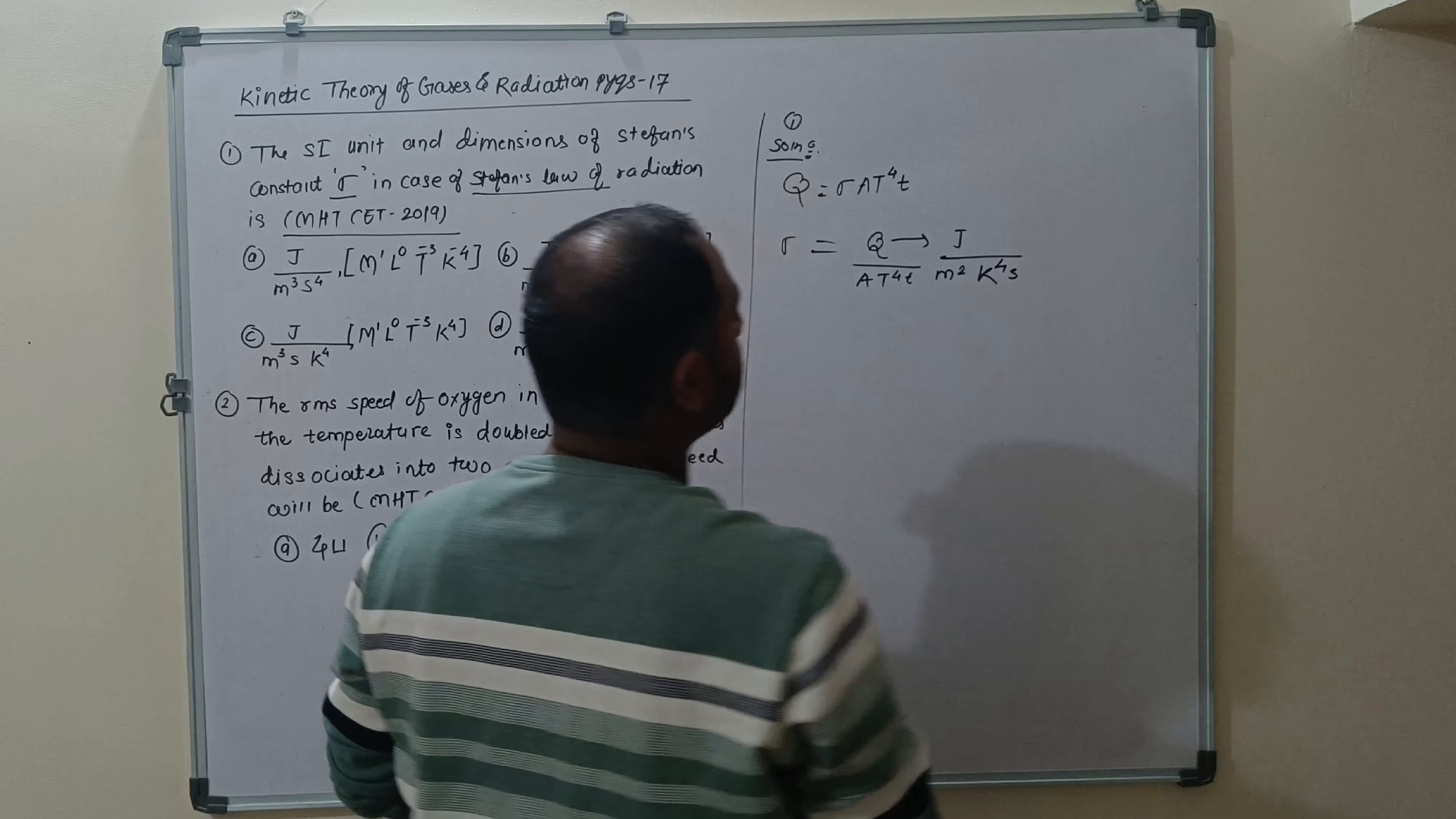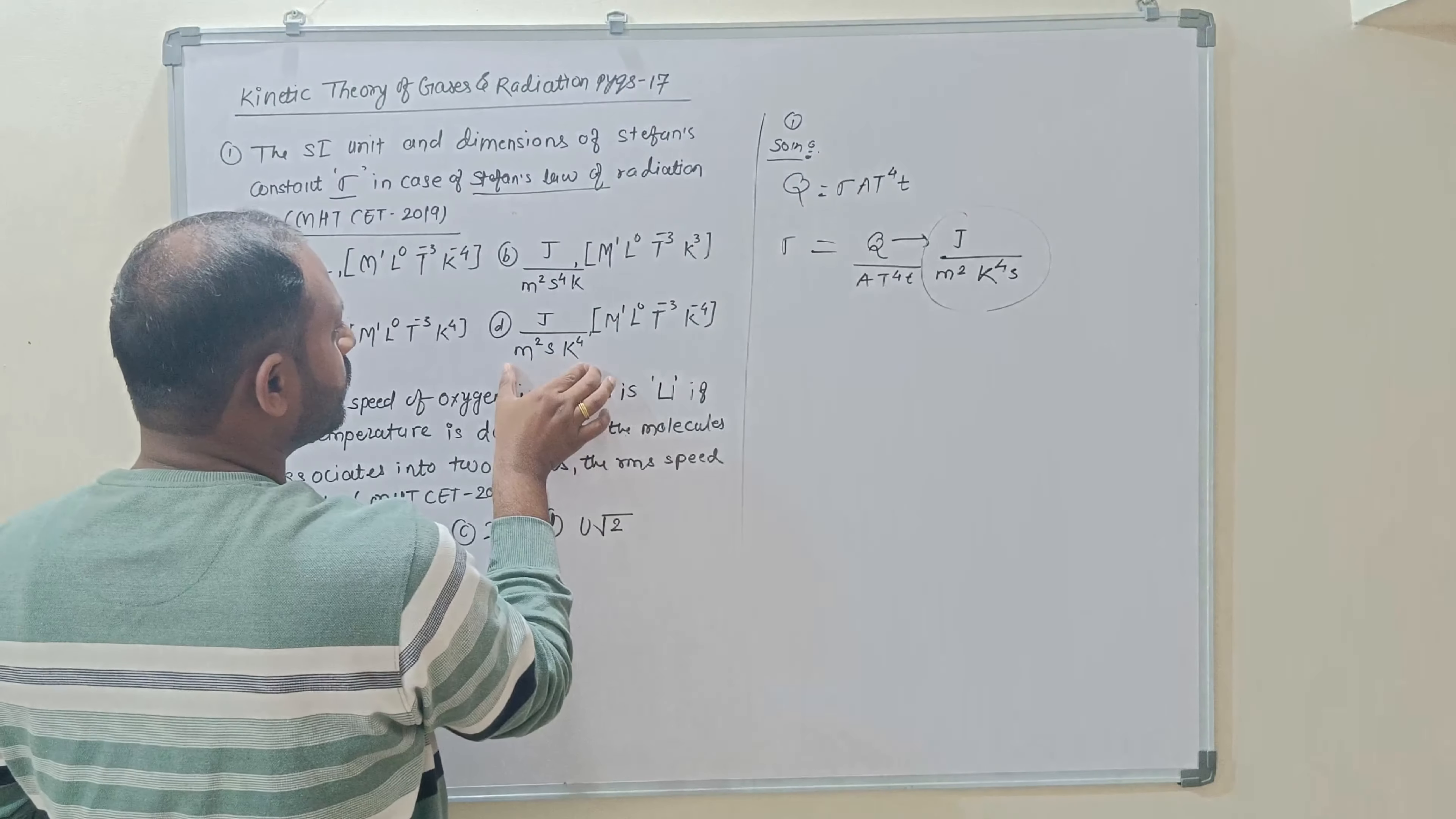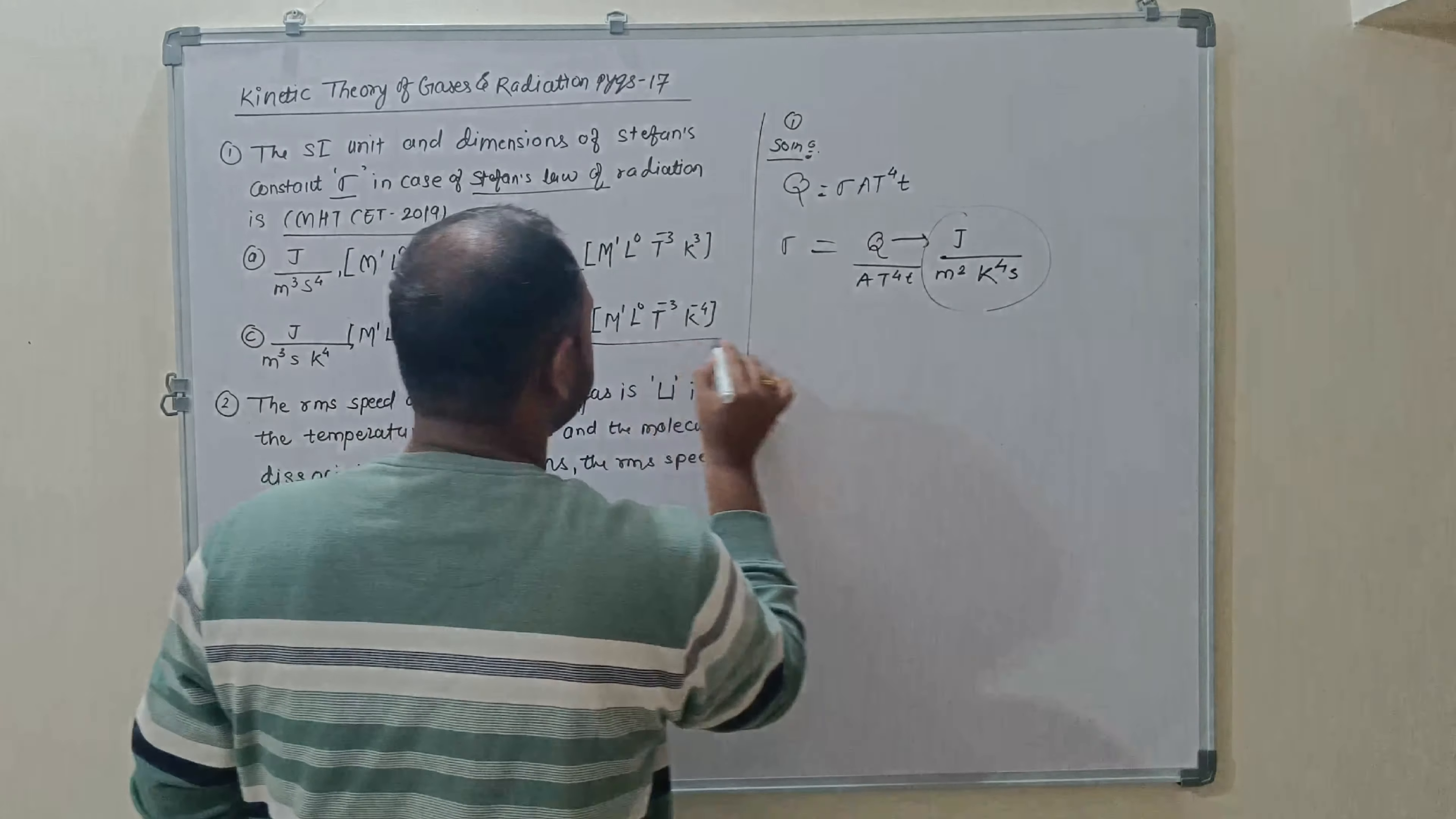The option to cross check: Joule upon meter square K power 4 into second. Here the second is S power 4. Option number last one is the correct one: Joule upon meter square second and K power 4. Therefore the option number last one is the correct one.